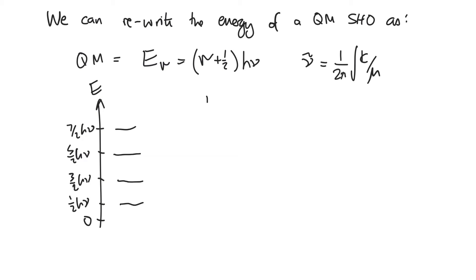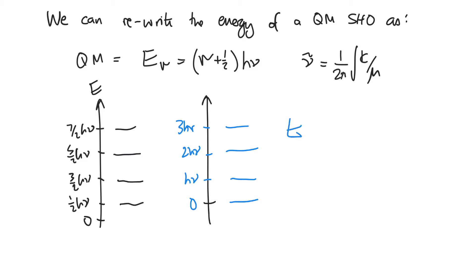We've said that's kind of annoying — let's set the energy levels differently and measure with respect to the lowest state. So this would be zero, subtracting half h-nu off, and then the levels become h-nu, 2h-nu, and 3h-nu. This is much easier. So we can write e_v equals v times h-nu — a much simpler expression. All we've really done is zeroed out that zero-point energy.